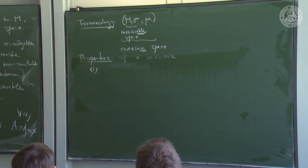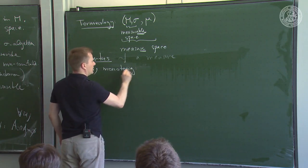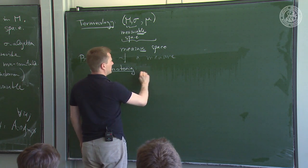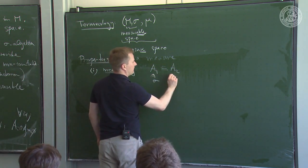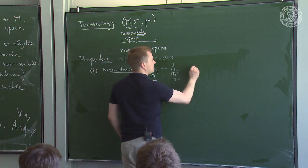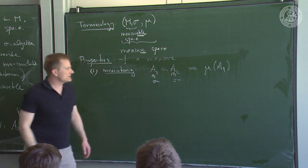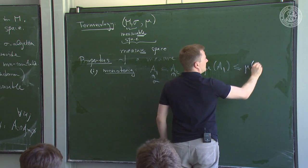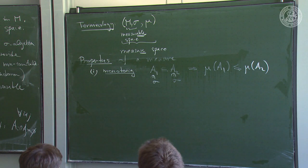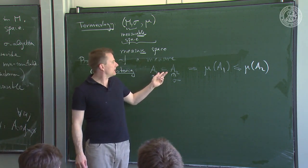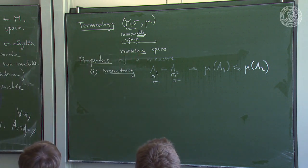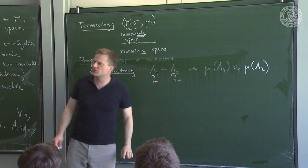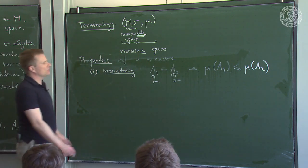Properties of a measure: the first is monotonicity. If A₁ ⊆ A₂ and both are measurable, then μ(A₁) ≤ μ(A₂). Don't be misled: even if the inclusion is proper, you could still have equality, because they might differ only by a set of measure zero — we will come to that.